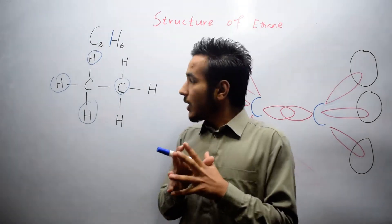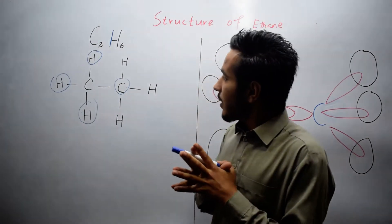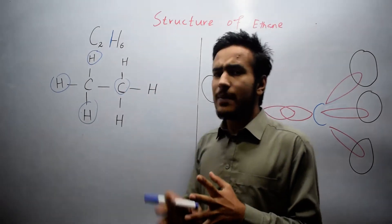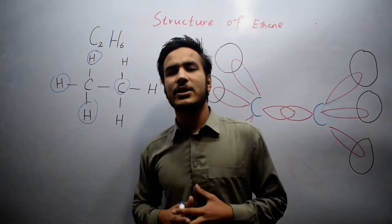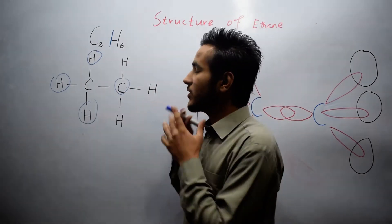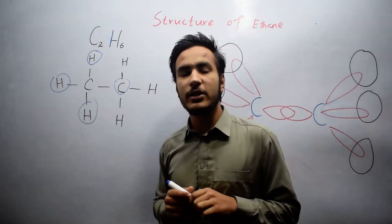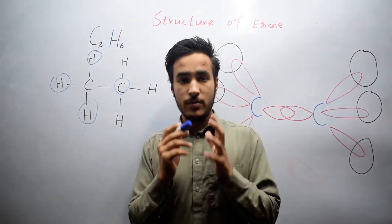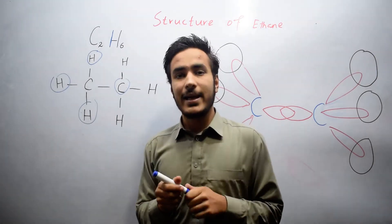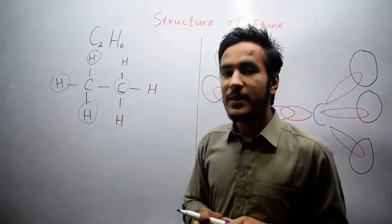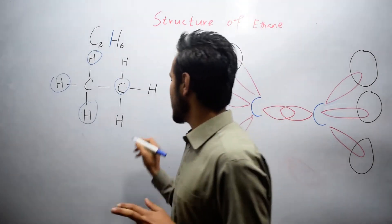Now we will talk about which type of hybridization is acquired by these carbon atoms in ethane. You should remember that in ethane there is sp3 hybridization.